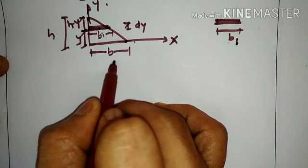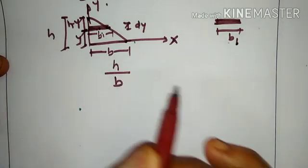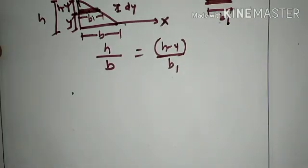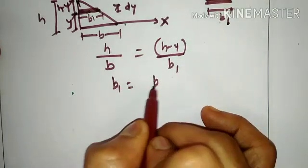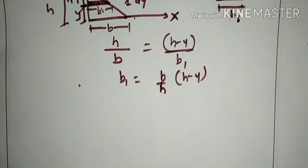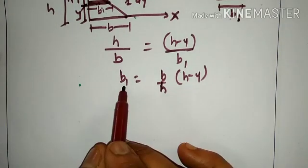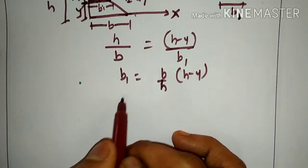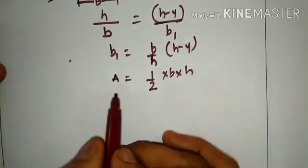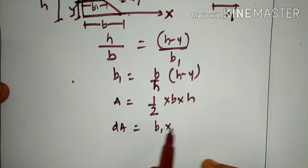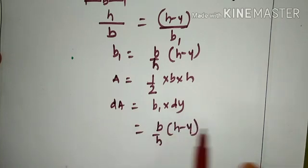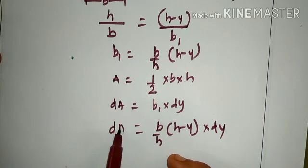The principle of similar triangles states that the height of the bigger triangle is H and the base is B. Likewise, the height of the smaller triangle will be H minus Y, and B1 equals (B/H)(H minus Y). This will be the expression for B1. The elemental area dA will be B1 times DY, which equals (B/H)(H minus Y) DY.